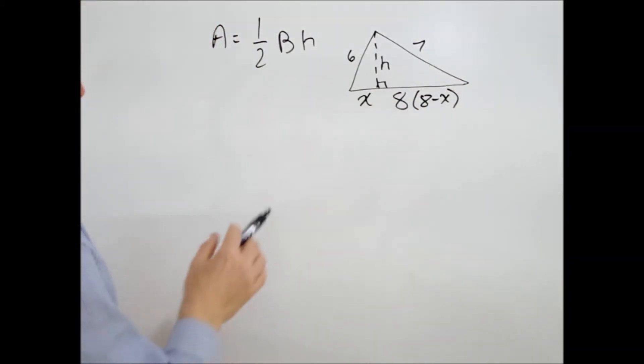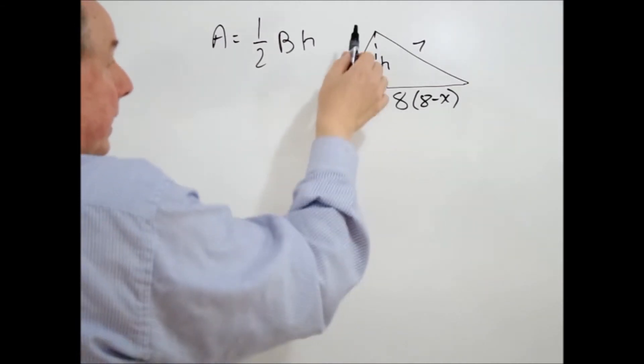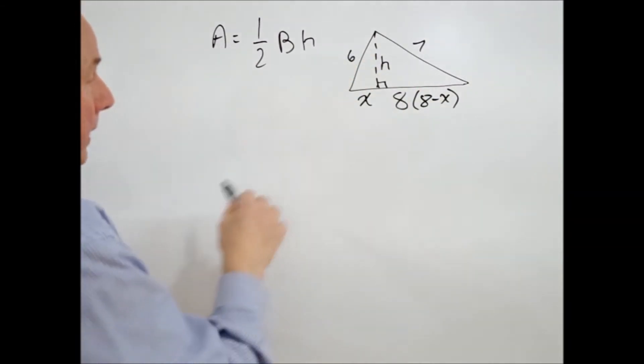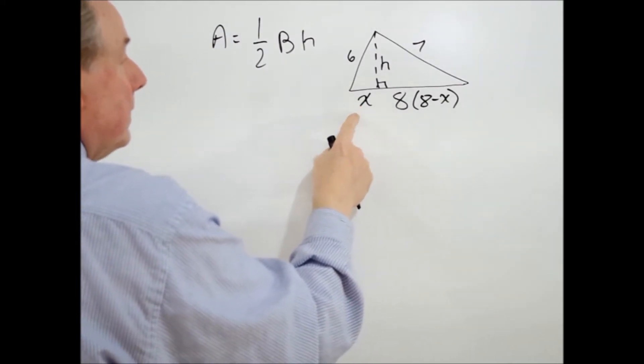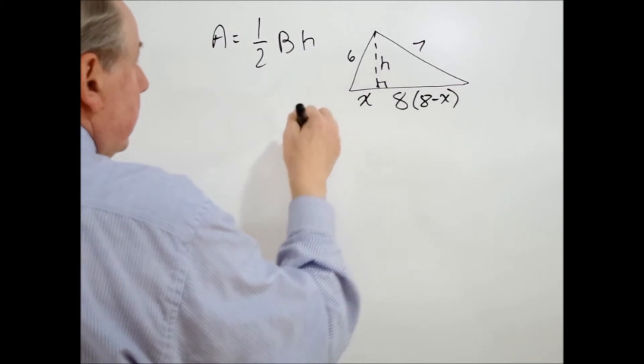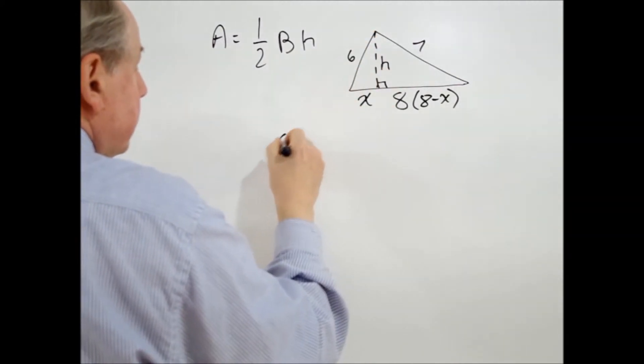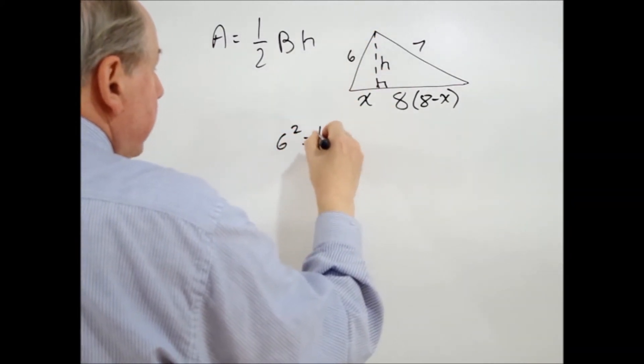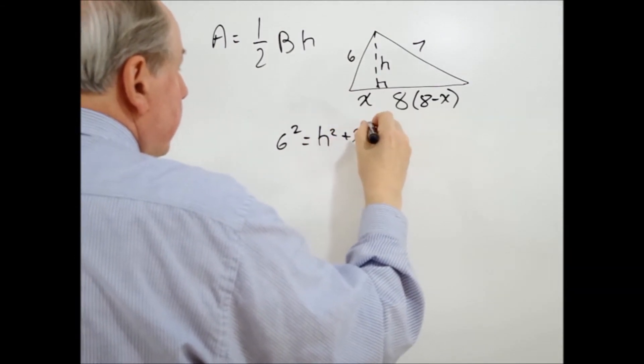The next step is we can look at the figure as it stands there and we can see that there are two right angle triangles that make up the full area of the given triangle. So the first right angle triangle consists of X, H, and six. So we can apply the Pythagorean theorem to it. So let's do that. We can say that this is the hypotenuse, so six squared is equal to H squared plus X squared.